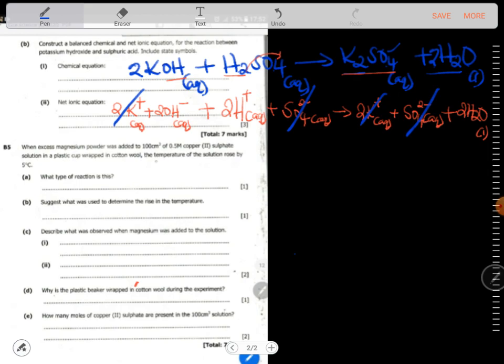What you have remained with, write it down. So we have remained with 2OH- aqueous plus 2H+ aqueous giving us water, 2H2O, which is liquid. You can see that this equation is also balanced. So this is what we call an ionic equation.